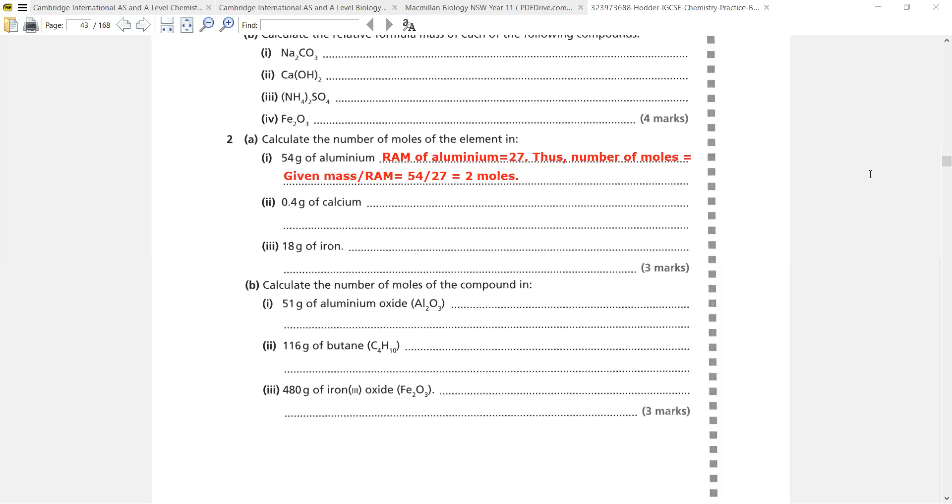So RAM of aluminium is 27 which is given. Thus the number of moles will be given mass divided by RAM, which is 54 by 27.